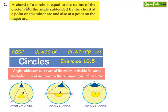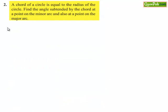Moving on to the second question: a chord of a circle is equal to the radius of the circle. Find the angle subtended by the chord at a point on the minor arc and also at a point on the major arc.